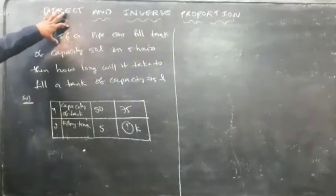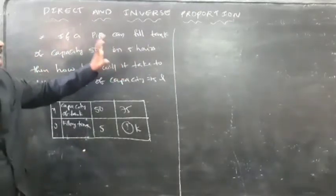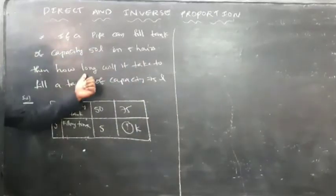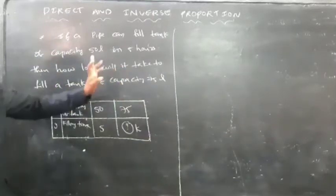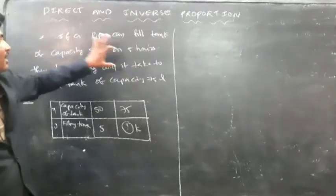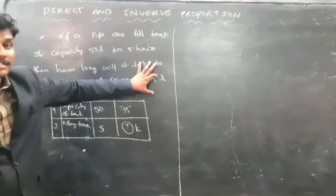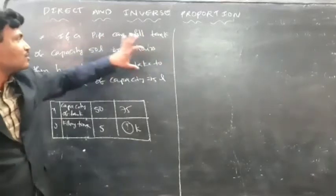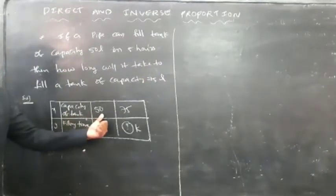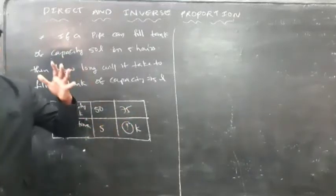Here is the next question. If a pipe can fill a tank of capacity 50 liters in 5 hours, how long will it take to fill a tank of capacity 75 liters? Here, capacity of the tank is increased from 50 liters to 75 liters. If the capacity of the tank increases, filling time also increases, so both are in direct proportion.